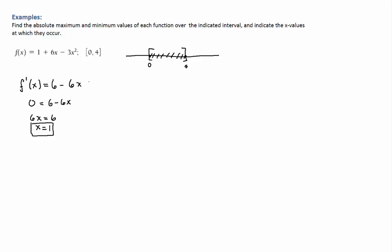So once you have found this, your candidates to be absolute min and absolute max are the endpoints. I should have started with x equals 0, x equals 1, and x equals 4.